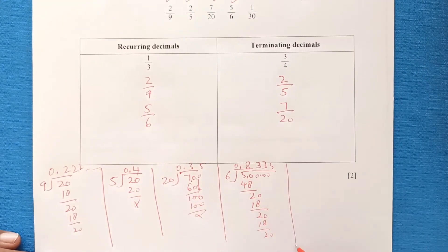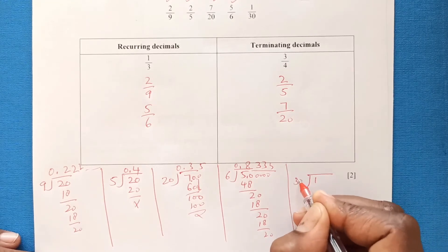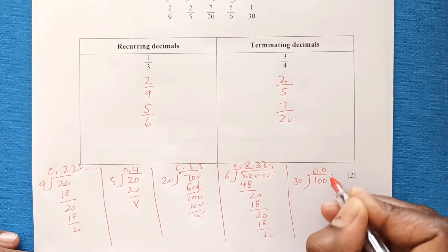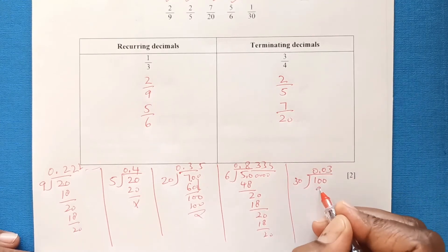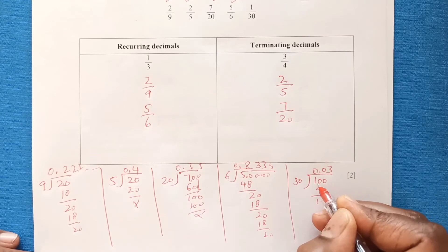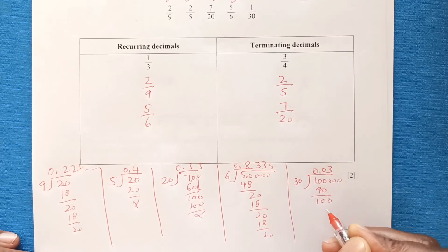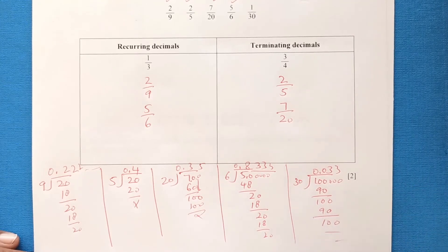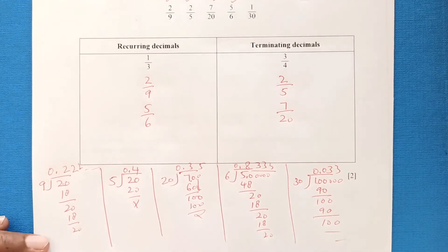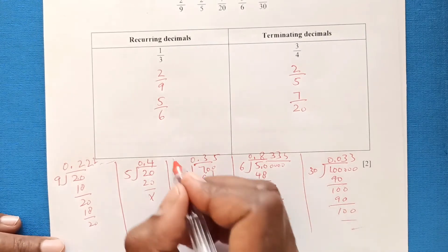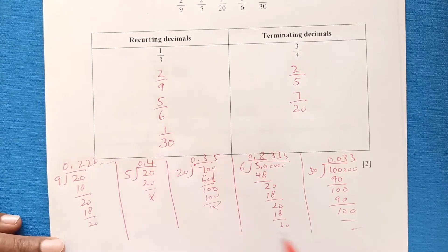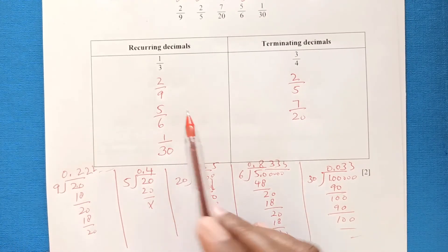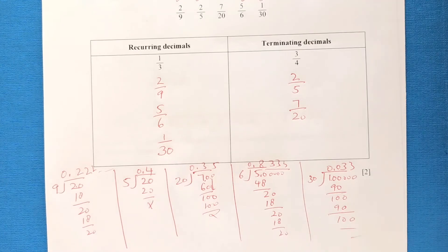For 1/30: dividing gives 0.0333... — the pattern continues without end, so this is also a recurring decimal. So 1/30 goes in the recurring column. That completes the table with all numbers in their correct positions.